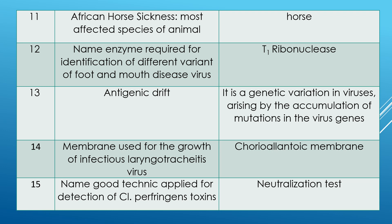Question 14: which membrane is used for the growth of infectious laryngotracheitis virus? Answer is chorioallantoic membrane. Question 15: name a good technique applied for detection of Clostridium perfringens toxin. Answer is neutralization test.